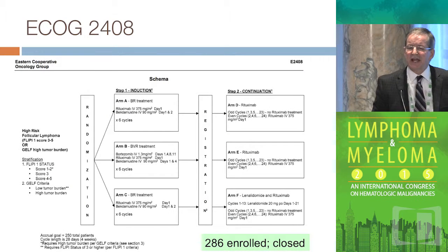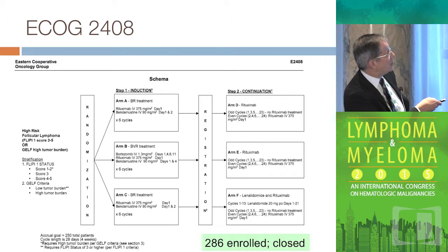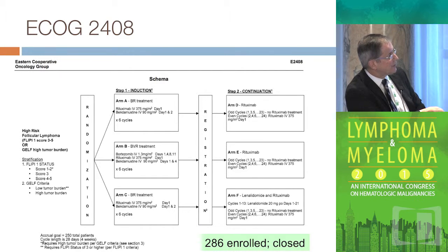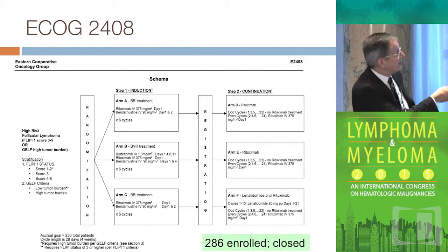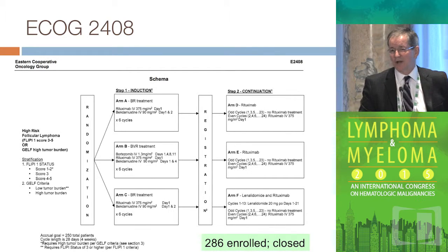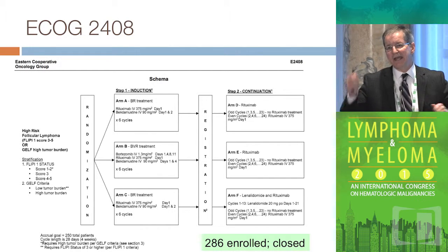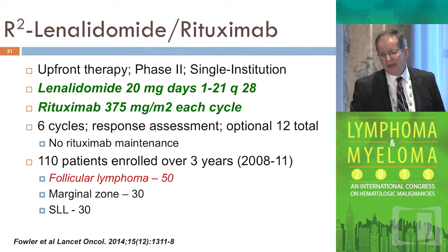The ECOG 2408 study was all BR-based, except one arm had Velcade added for induction. Everyone received two years of Rituxan maintenance, and one arm received R-squared — lenalidomide plus Rituxan. This study will answer two questions: does adding Velcade upfront help, and does adding a year of Revlimid afterwards help?